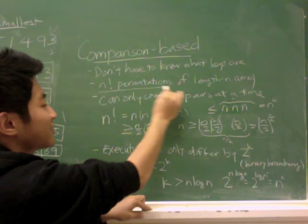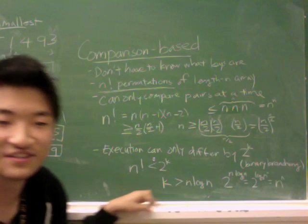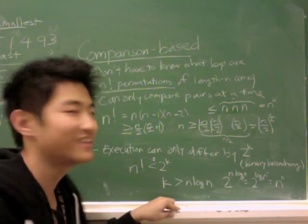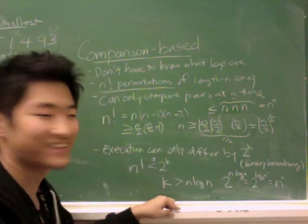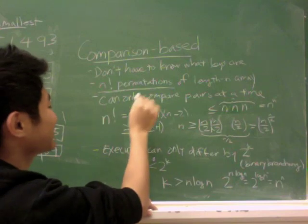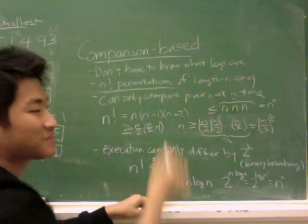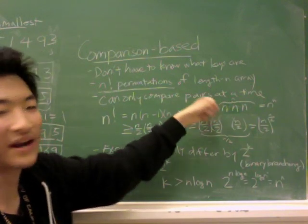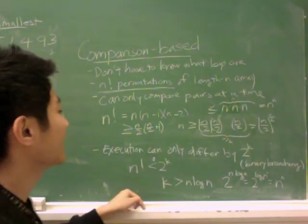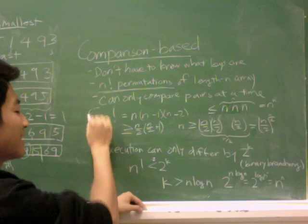You realize that there are n factorial permutations of any length n array. And this is basic seventh grade algebra, hopefully. And again, just to reiterate, comparison-based sorts can only compare pairs one at a time. And let's go back to the math here.